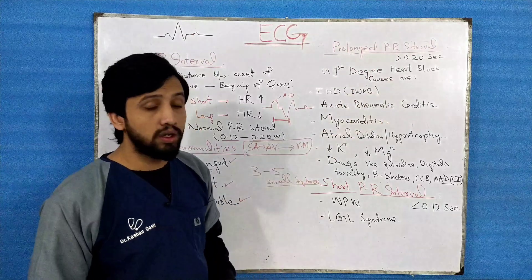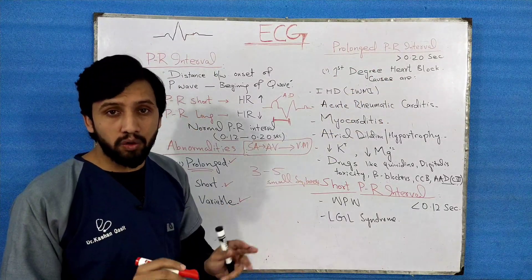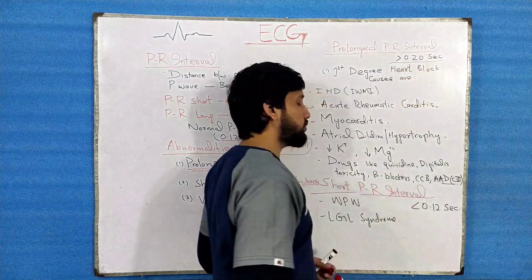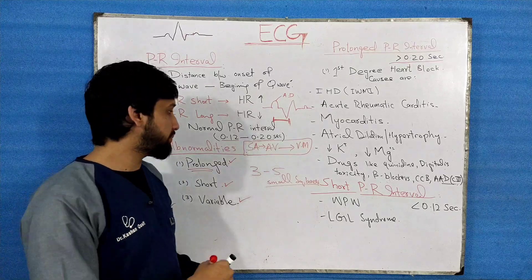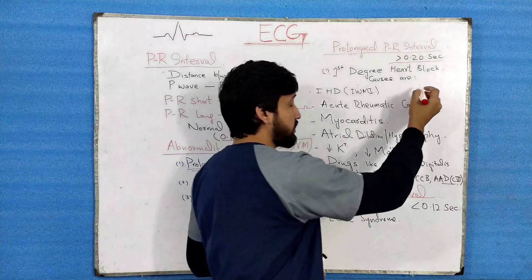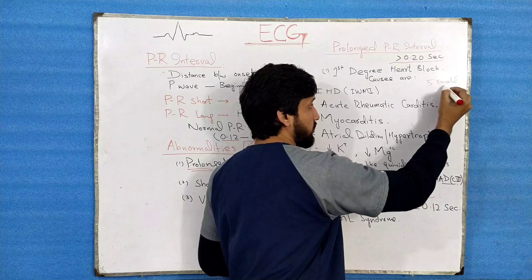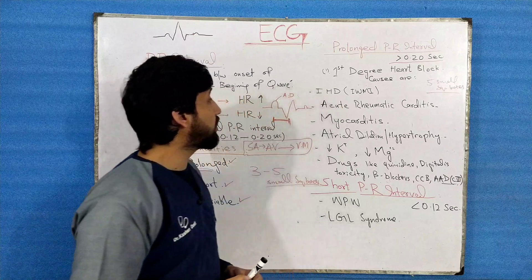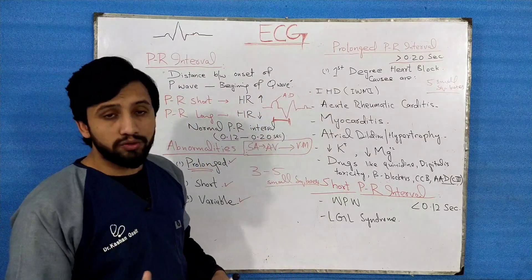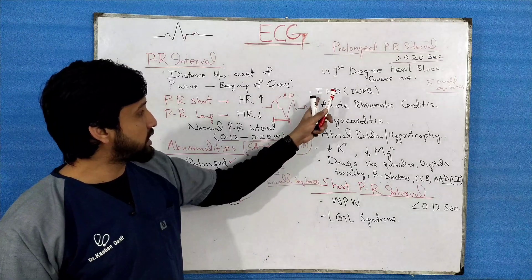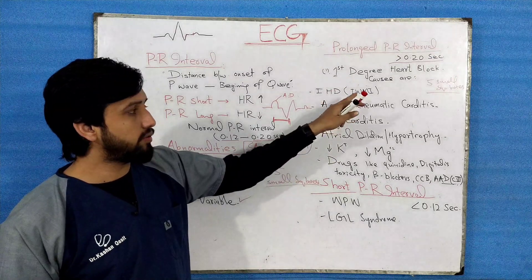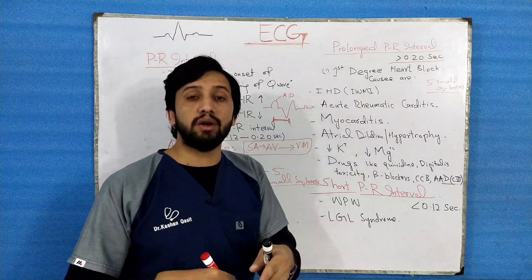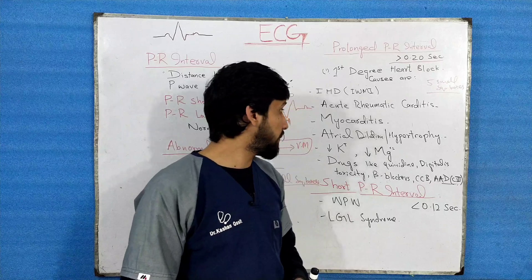A prolonged PR interval means it is greater than 0.20 seconds, which corresponds to more than five small square boxes on an ECG paper. The causes for prolonged PR interval include ischemic heart diseases such as inferior wall MI, and acute rheumatic carditis, which involves degeneration of the fibers prolonging the PR interval.